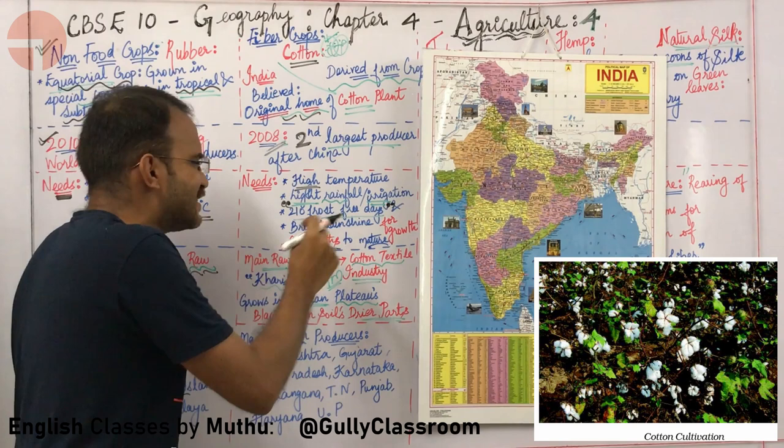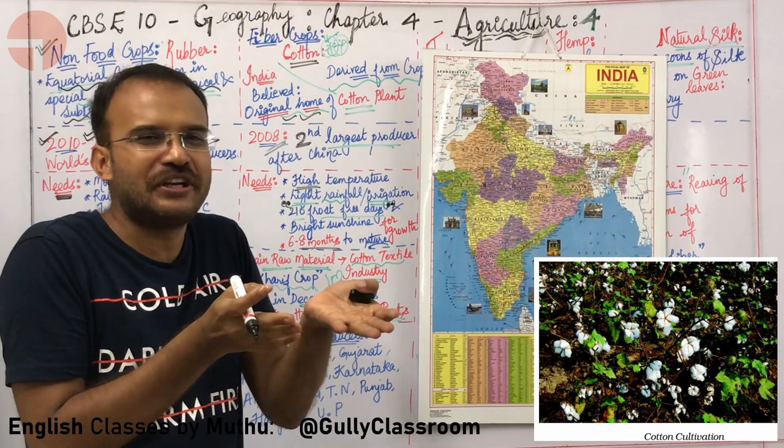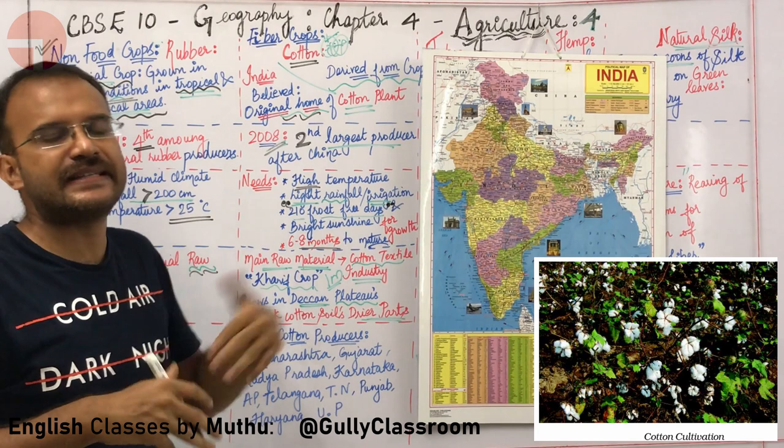Cotton is the main raw material for the cotton textile industry. Cotton is a kharif crop.